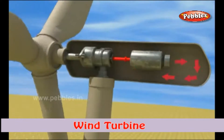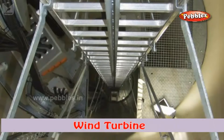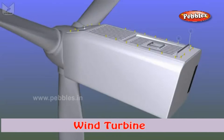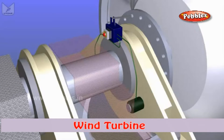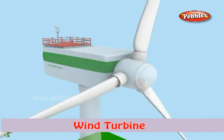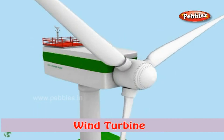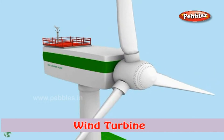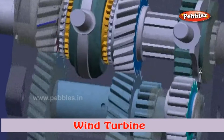When wind accelerates and reaches a certain speed of 4 meters per second, the blade gradually rotates and produces mechanical energy. The energy produced is then converted into electricity via generators and stored in batteries for further use. The amount of energy production depends on the rotational speed of the turbine, which in turn is directly proportional to the speed of wind.